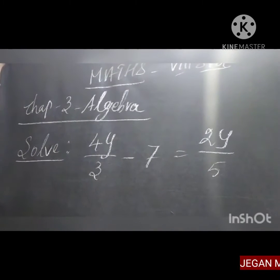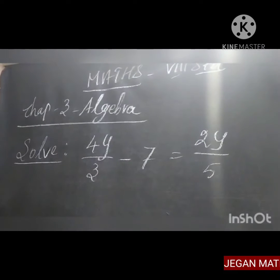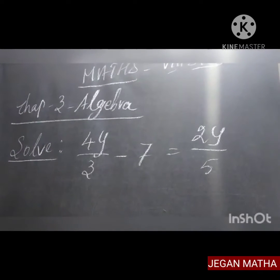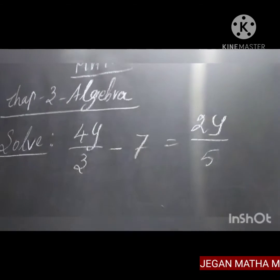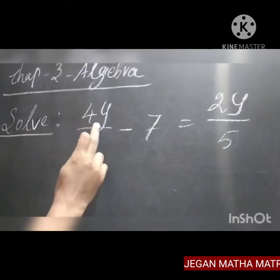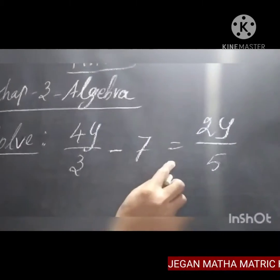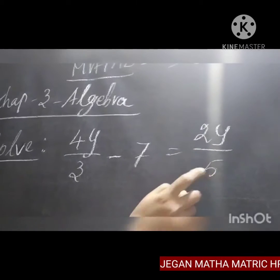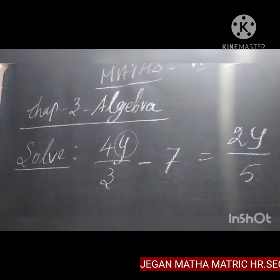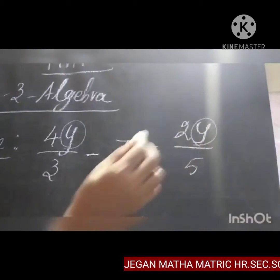Good morning students. Today you are going to learn about how to solve the given algebraic equation in chapter 3 algebra. See the heading — the given equation expression is 4y divided by 3 minus 7 equal to 2y divided by 5. Solve means you have to find out the value of the variable. Here the given variable is y.